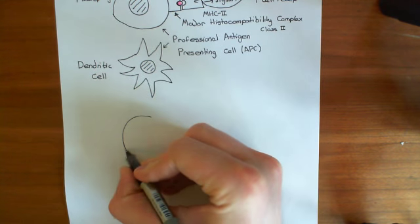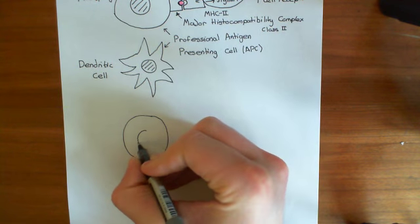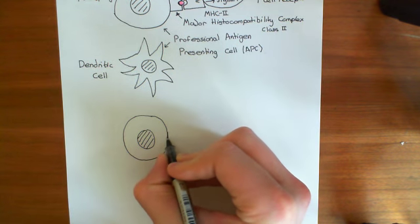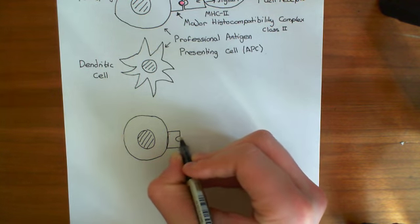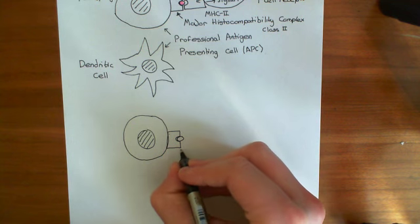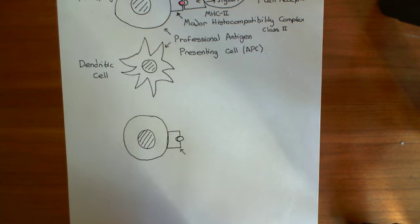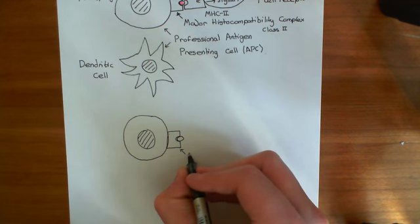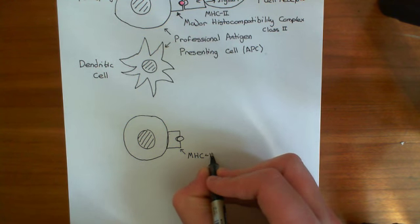If we've got a macrophage here which has phagocytosed a pathogen and has now presented the antigens on MHC class 2 on its surface. Here's MHC class 2 with an antigen of the pathogen — a fragment of a protein that the pathogen had, which is not something that human cells would ever have. This is major histocompatibility complex 2, MHC 2.